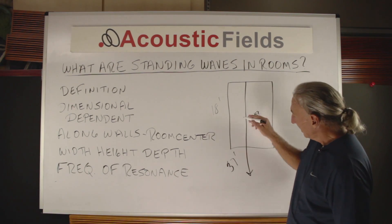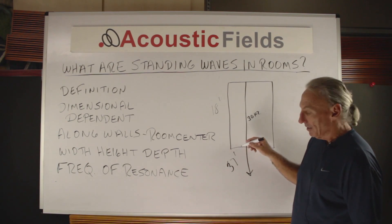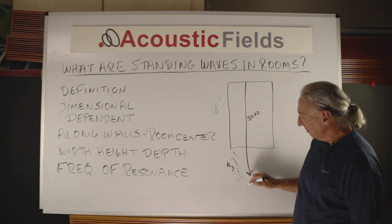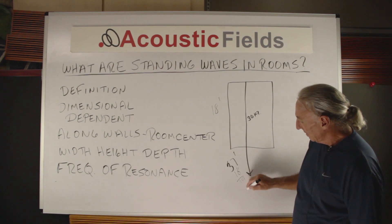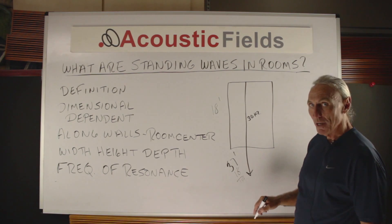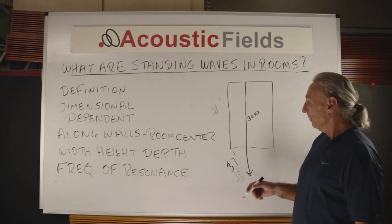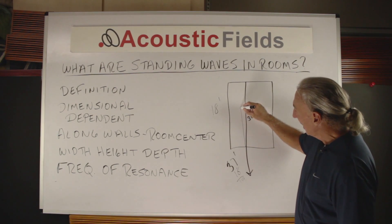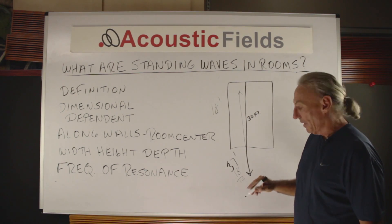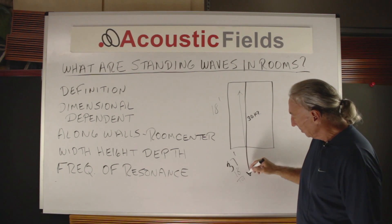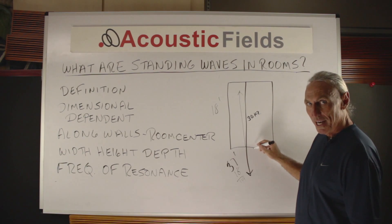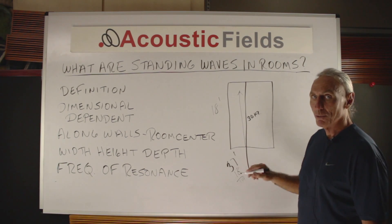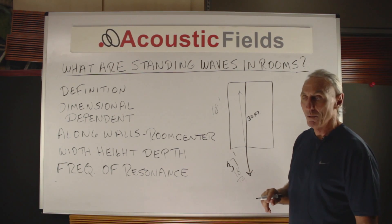So if you subtract 18 from that, you get 19 feet — where does that excess energy go? Well, some of it goes back into the room and is reflected. Some goes through the room. Some stays at the boundary surface and accumulates, and that's where you get standing waves.